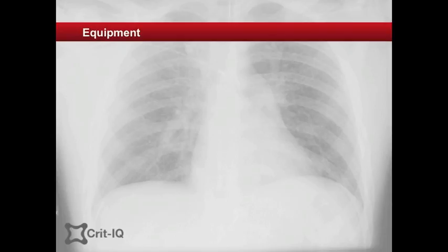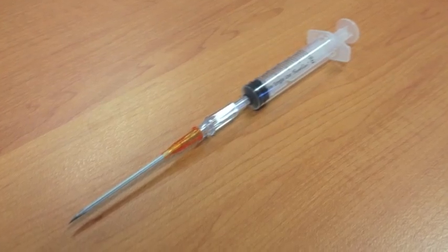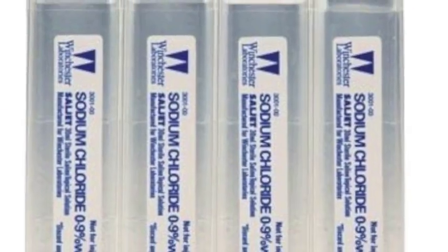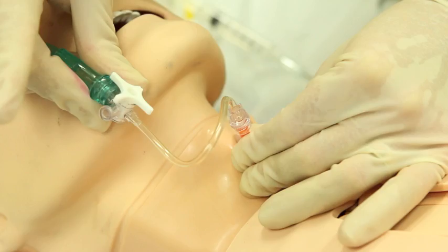The equipment required for a needle cricothyroidotomy includes a cannula attached to a syringe, some sterile saline, antiseptic wash and a means of delivering oxygen intermittently. In this example, a three-way tap attached to oxygen tubing.